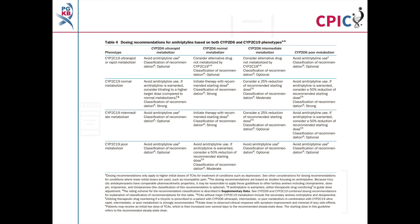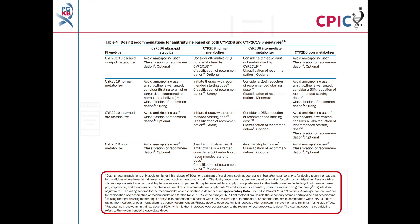The dosing recommendations for amitriptyline can be found in tables 2, 3, and 4 of the guideline. Detailed footnotes pertaining to the recommendations can be found at the bottom of each table. Be aware that these dosing recommendations are for cases where higher initial doses of a TCA are warranted, such as in the treatment of depression. Recommendations for lower initial doses, for example in the treatment of neuropathic pain, are given in the guideline manuscript.